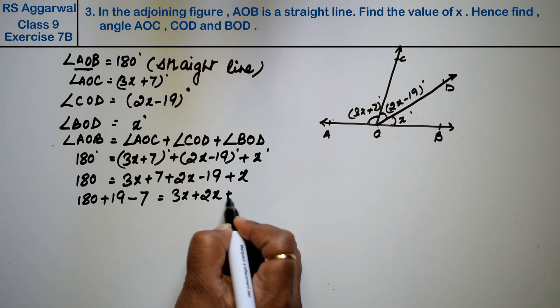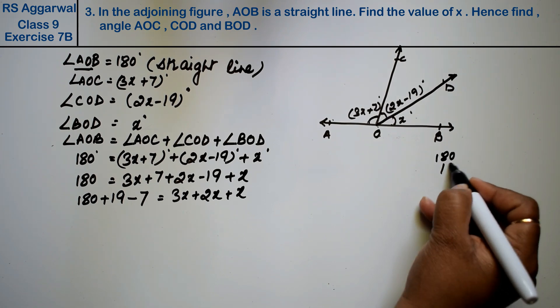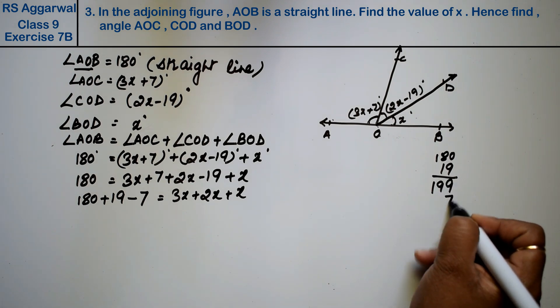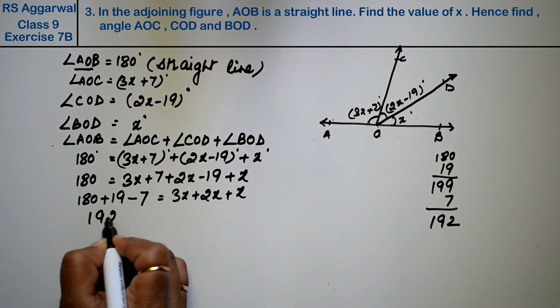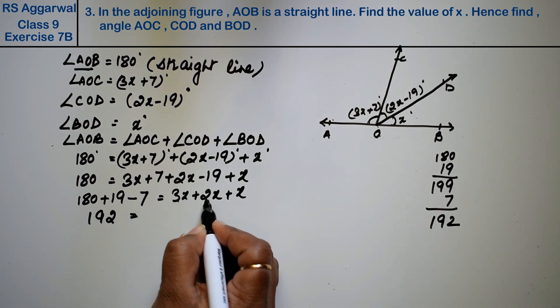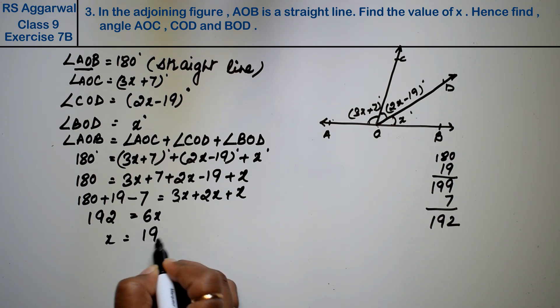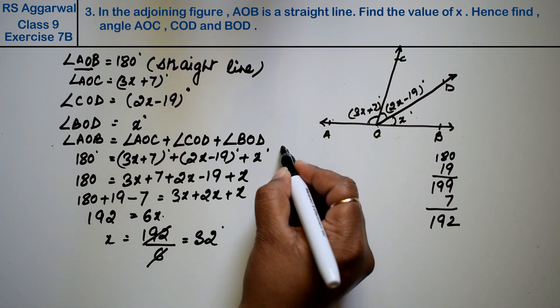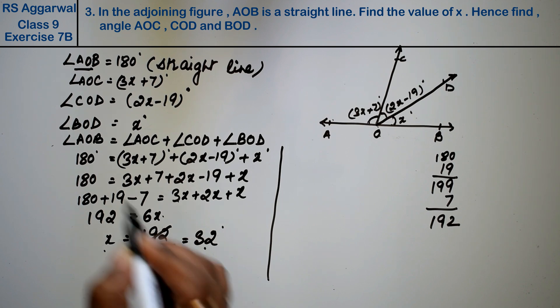Now this becomes 180 plus 19 which gives us 199 minus 7 equals 192. That equals 3 plus 2 plus 1, that is 6x. The value of x is, this was multiply so becomes divide. 6 into 18 is 3, 6 into 12 is 2, so x's value is 32. So x is BOD, angle BOD equals x equals 32 degrees.